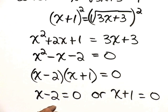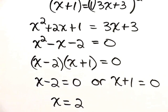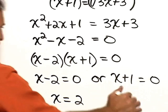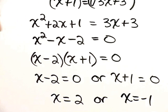Solving each of these individual equations, we add 2 to both sides, we get x equals 2. In this equation, we subtract 1 from each side, we get x equals negative 1.